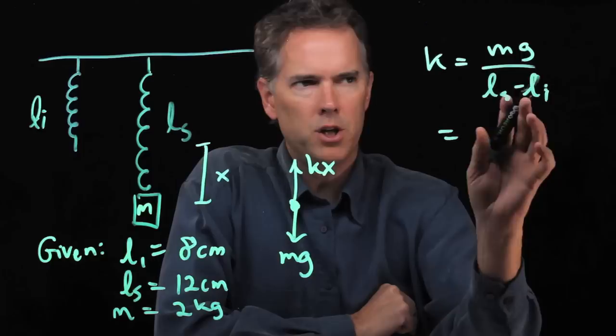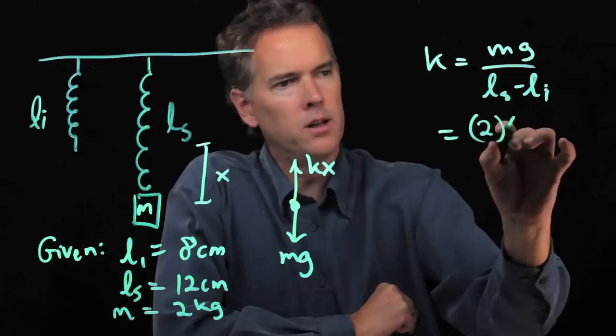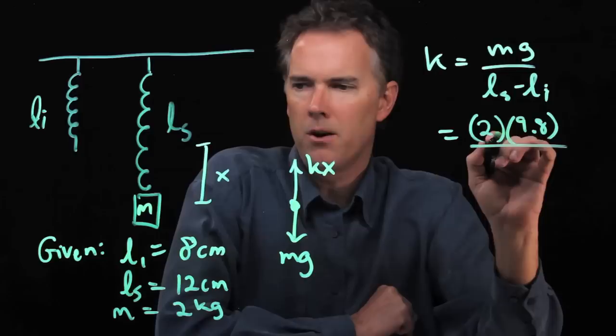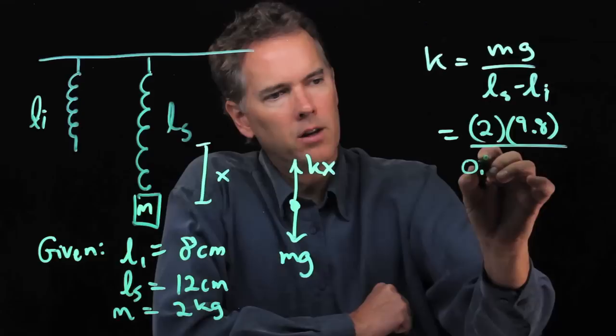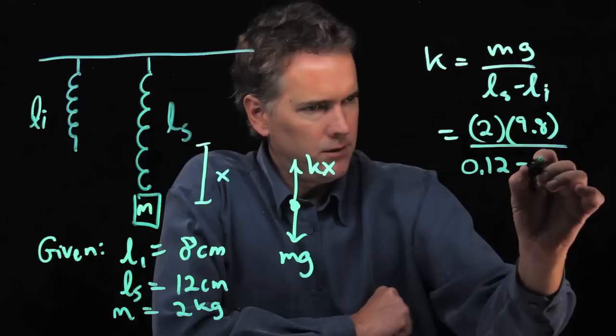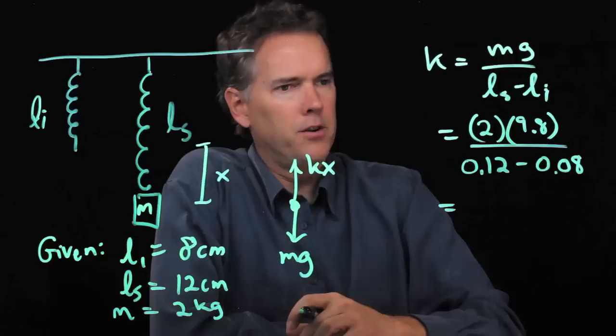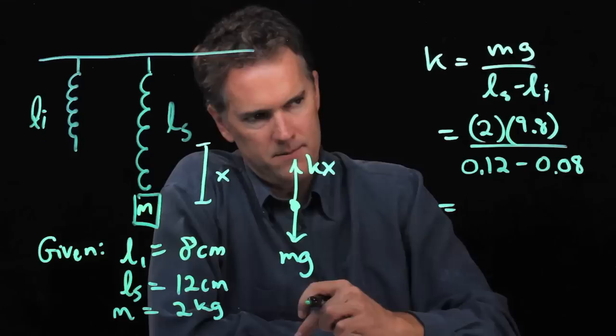So K was Mg over LS minus Li. Let's plug in some numbers in SI units. We have 2 kilograms for the mass, G is 9.8 meters per second squared, LS is 12 centimeters but in SI units that becomes 0.12 meters, Li is 8 centimeters so that becomes 0.08.